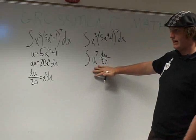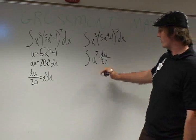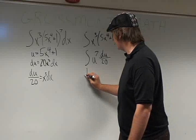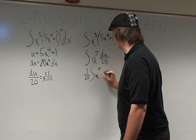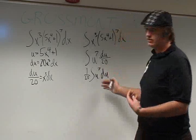So now we can take the 1 over 20 out, put it on the left side of the integral, and solve it.